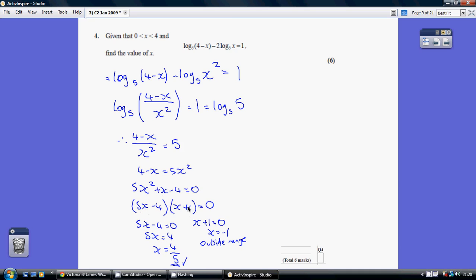Factorizing we get this, giving us x values of 4 over 5 and minus 1. Now, x is between 0 and 4, so the only solution we require is x equals 4 over 5, or 0.8.